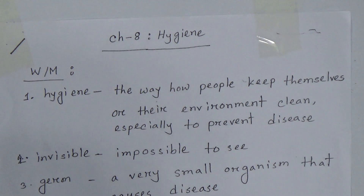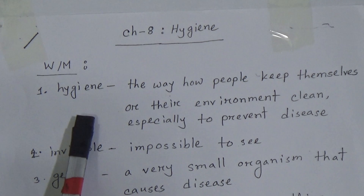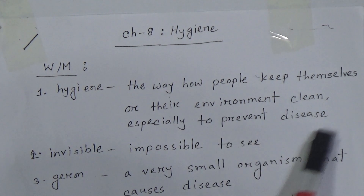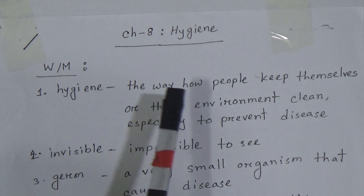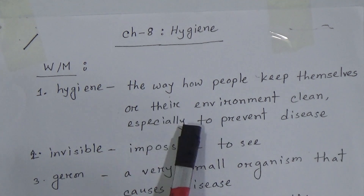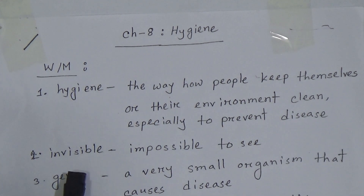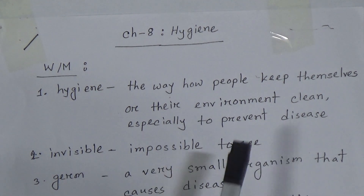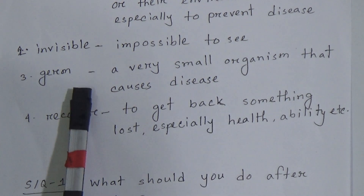Now we start our class. Chapter 8: Hygiene. First, word meanings. Number one — hygiene means the way how people keep themselves or their environment clean, specially to prevent disease. Number two — invisible means impossible to see.